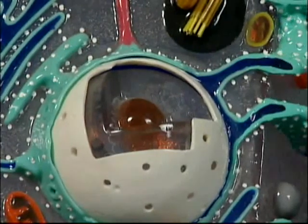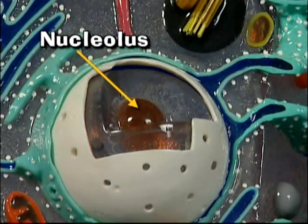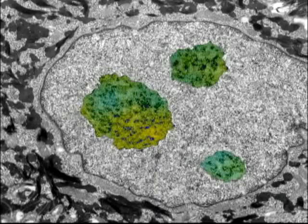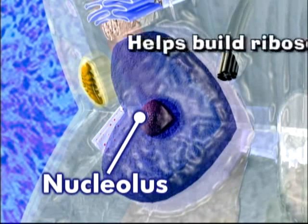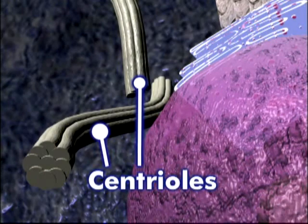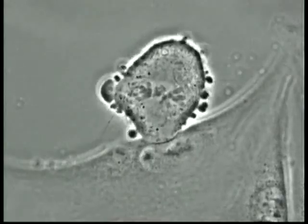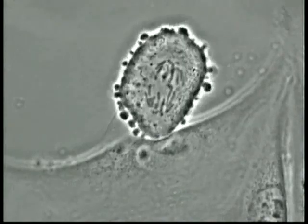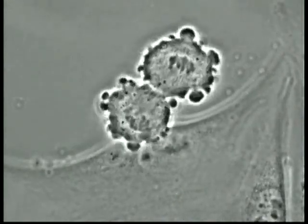Inside the nucleus is the nucleolus, shown as a small, round, dark area. Cells may have one or more nucleoli, or none at all. The nucleolus helps build ribosomes, the cell's protein producers. An organelle located just outside the nucleus is the centrosome. Inside the centrosome are a pair of smaller organelles called centrioles, which lie perpendicular to each other near the nucleus and are composed of microtubules. The centrioles play a role in cell division — during mitosis or meiosis, they migrate to the poles of the cell and create the spindles, which act like cables that pull the cell apart.